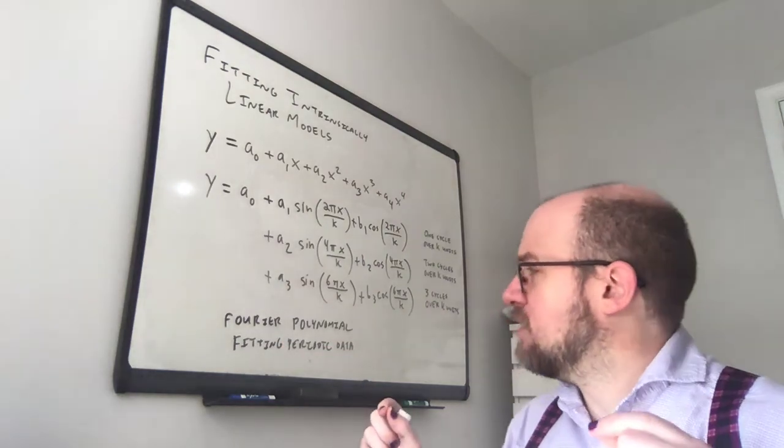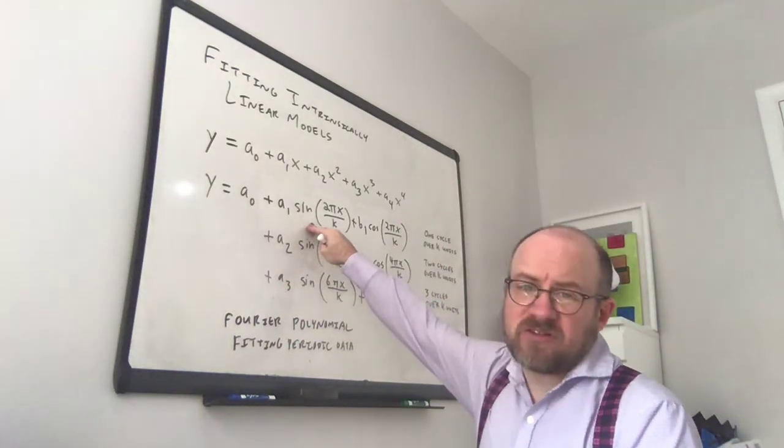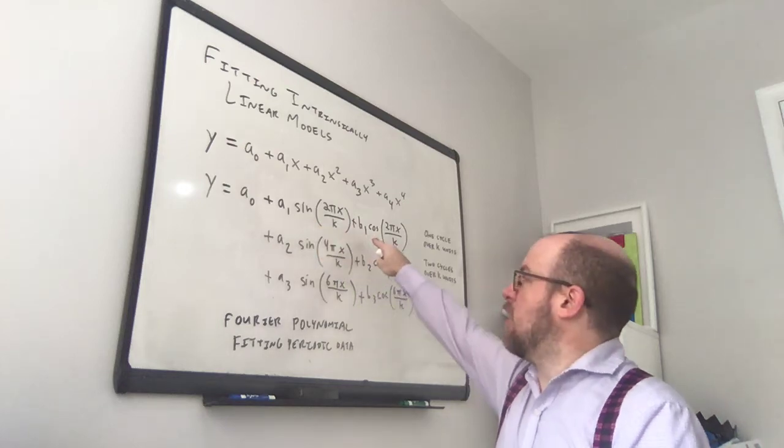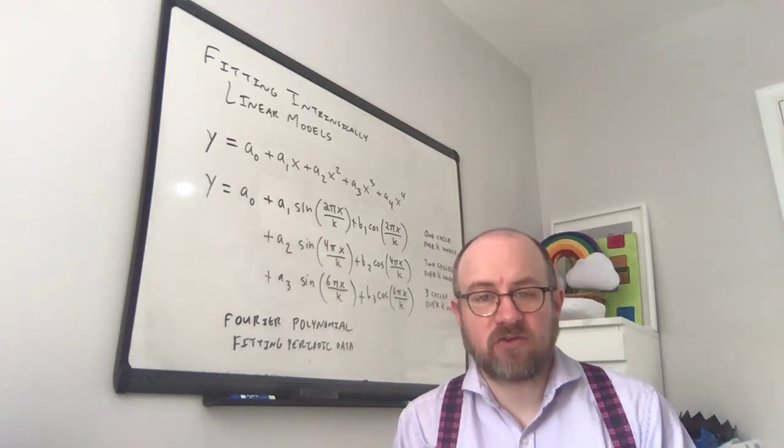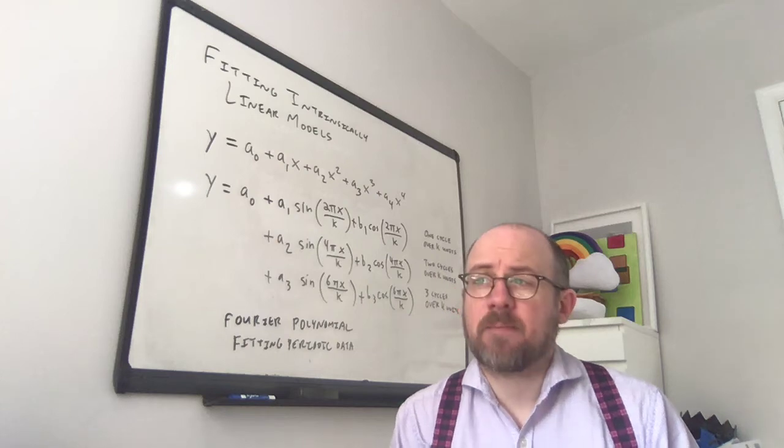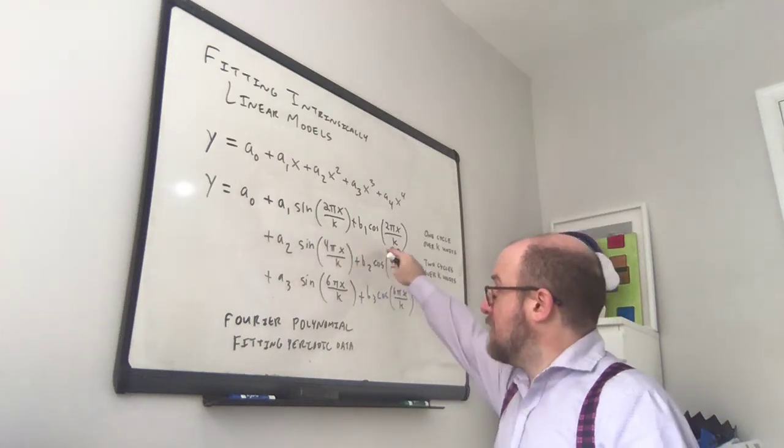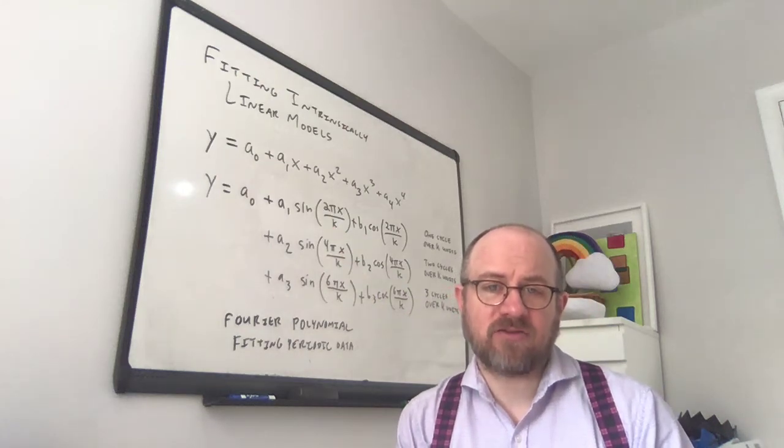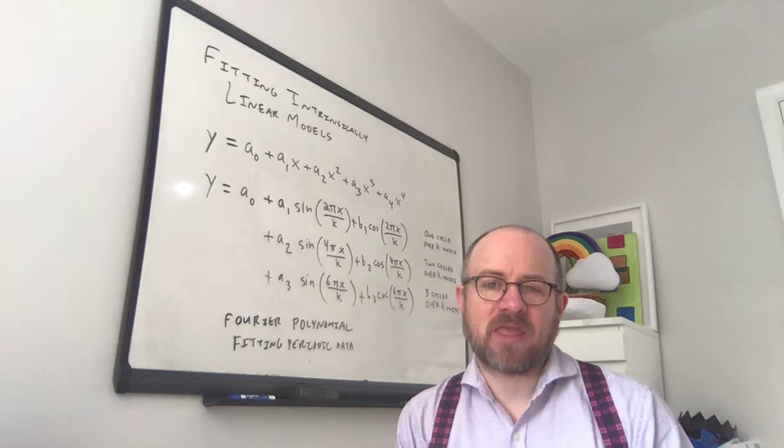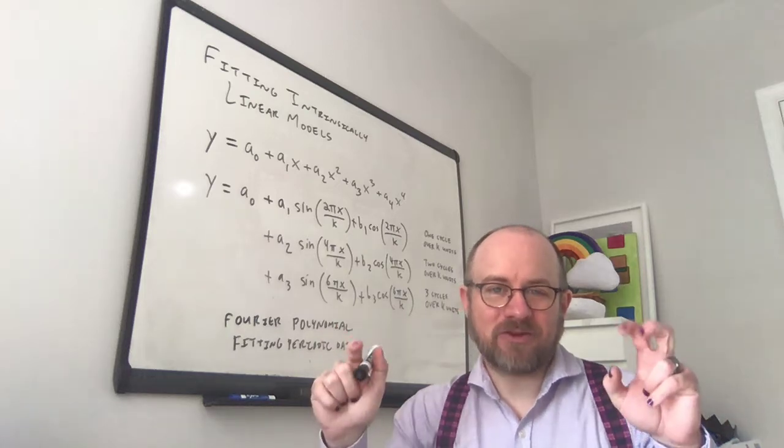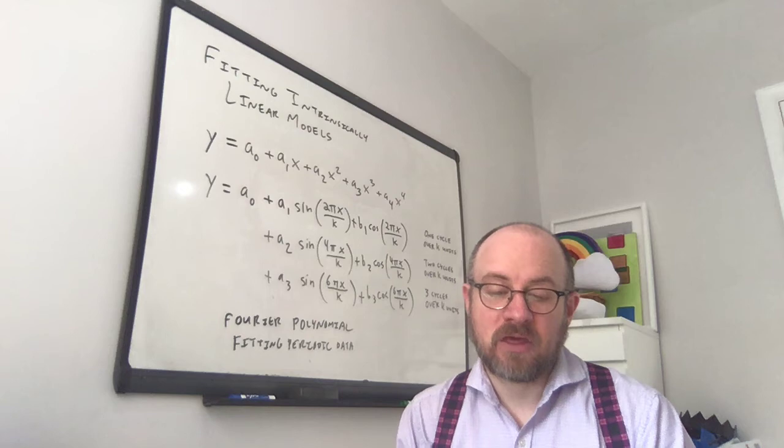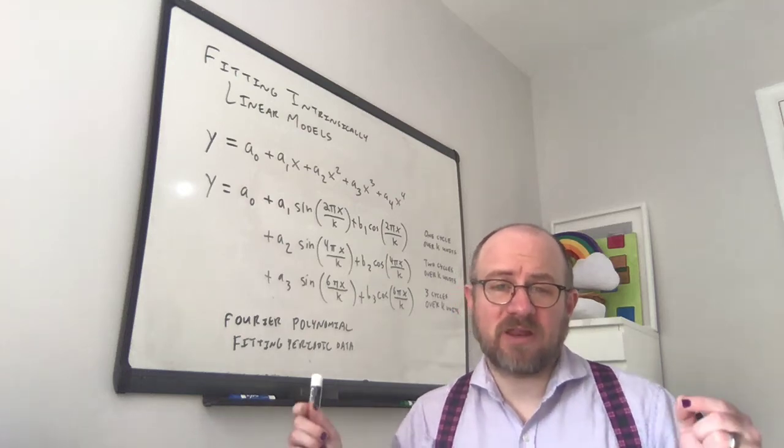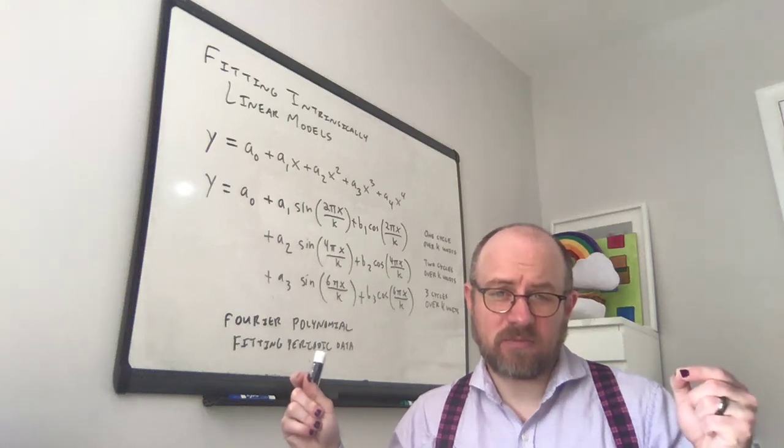And so the simplest way to do this is to start off with this first term. So sine of two pi x over k, and cosine of two pi x over k, if you think about the period of a trigonometric function, these two functions are going to repeat every k units. So naturally the period of sine is two pi. If you divide by two pi over k, which is the frequency term here, then you get the wavelength. And so that tells you that every k units, this is going to repeat.